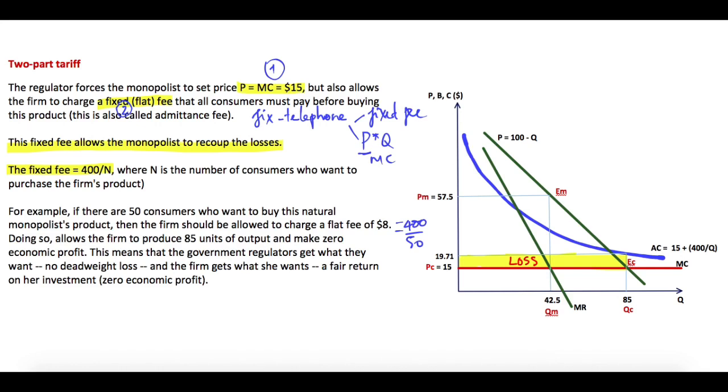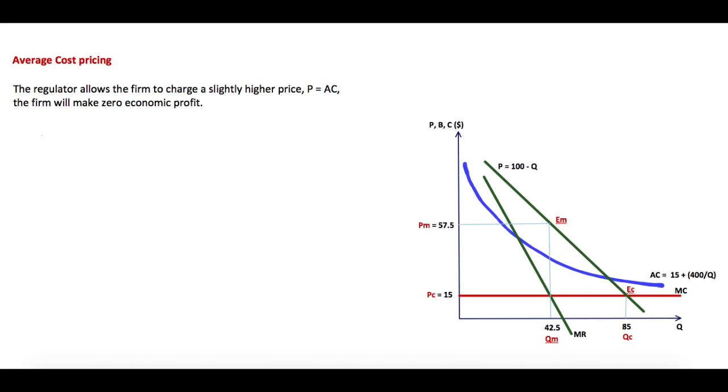allows the firm to produce 85 units of output and make zero economic profit. This means that the government regulator gets what they want—no deadweight loss—and the firm gets what she wants—a fair return on her investment, or zero economic profit. And finally, the average cost pricing: